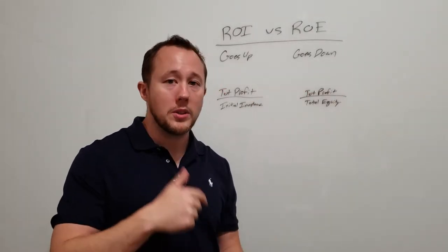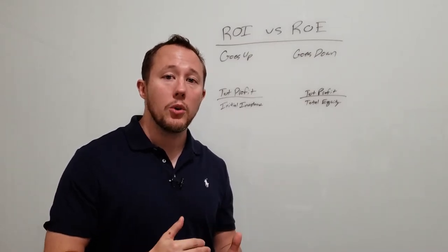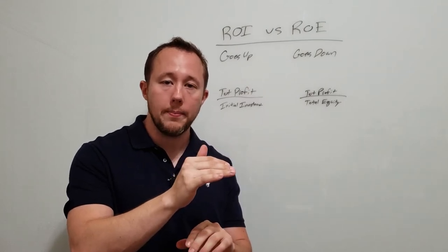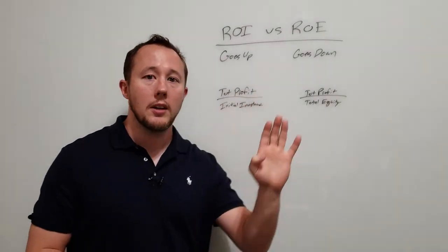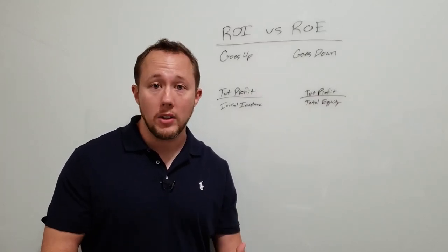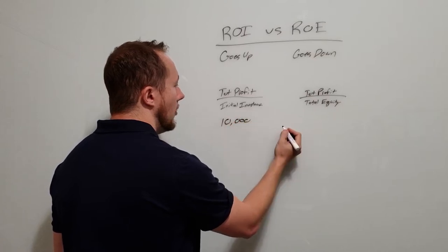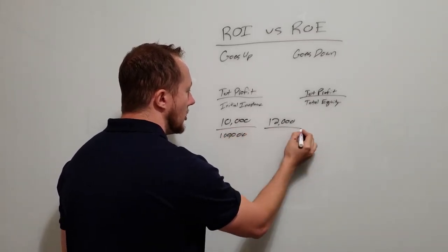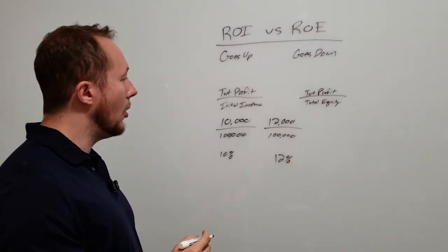Here's something interesting that most people don't realize: your ROI pretty much always goes up and your ROE pretty much always goes down. Your initial investment never changes but rents generally go up over time. So your expenses will go up, your rents will go up, and your profits — the total actual dollar amount — will go up, but your initial investment will never change. So imagine this year you have $10,000 in profits, and then rents go up over the next five years and you have $12,000 in profits. Your denominator is still $100,000, so your return goes from 10% to 12%. Your ROI has gone up.